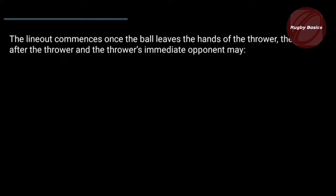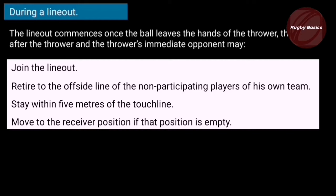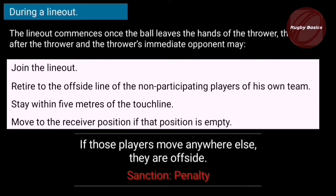The line-out starts the moment the ball leaves the thrower's hands. At that moment, the thrower and their immediate opponent are allowed a few options: they may join the line-out, retire to the offside line which is 10 meters back, stay within five meters of the touch line, or move to the receiver's position if it is not already occupied.